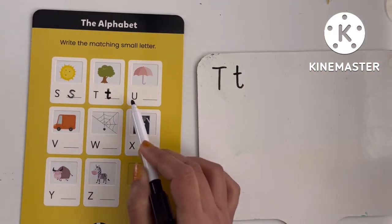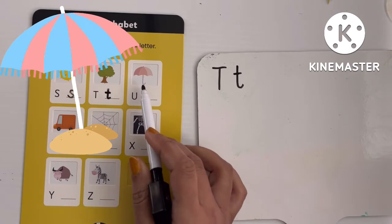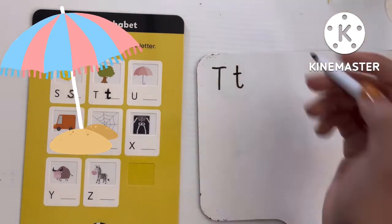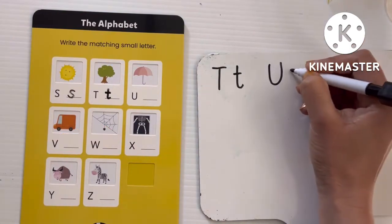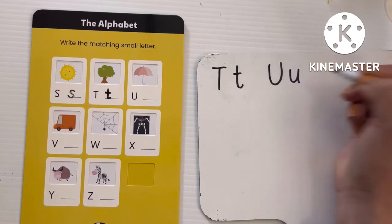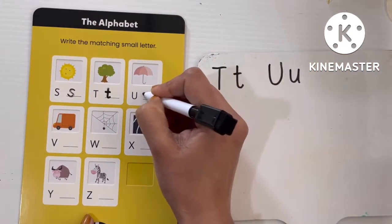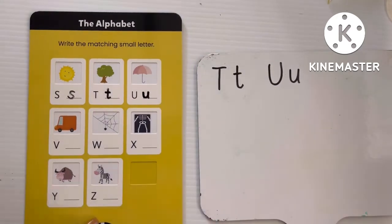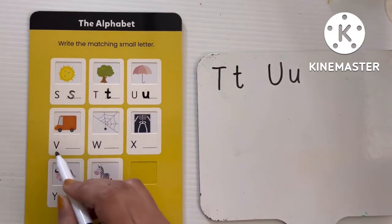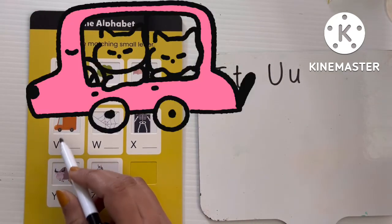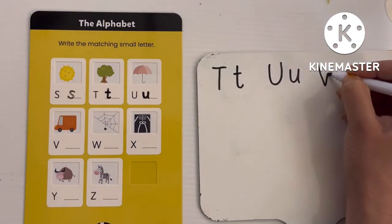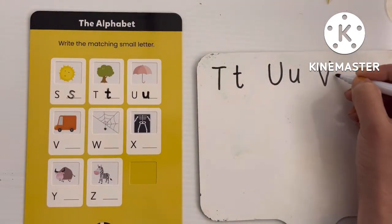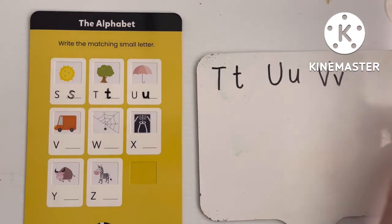Next, U — U means umbrella. Here is capital U and lowercase u. Next, V — V means van. This one is capital V, and in lowercase we write it like this: v.